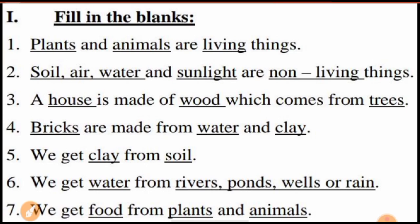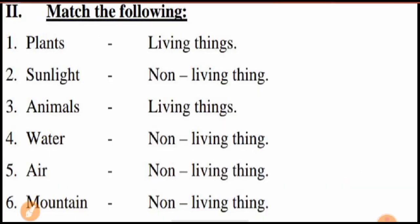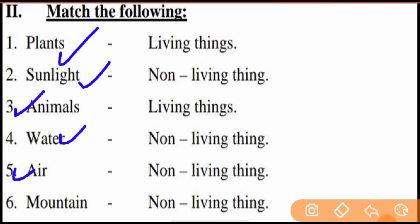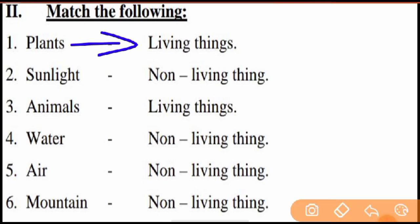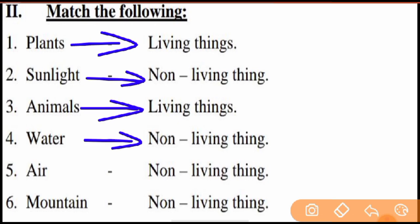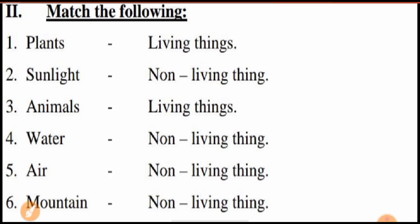Last exercise: match the following. Some things are listed — plants, sunlight, animals, water, air, and mountains — and you have to describe whether they are living things or non-living things. Plants: living things. Sunlight: non-living. Animals: living things. Water: non-living. Air: non-living. Mountains: non-living. You can put all that down in your notebook. This was the lesson for today. Thank you, take care.